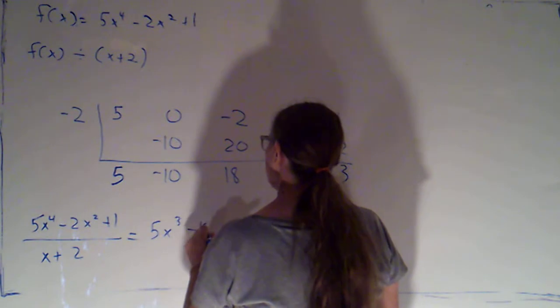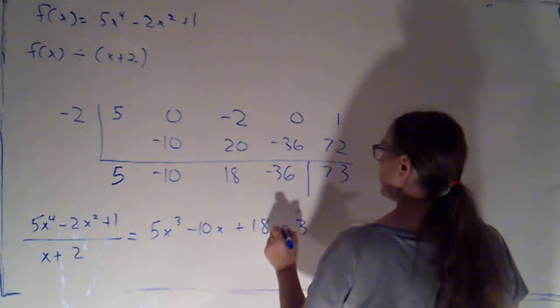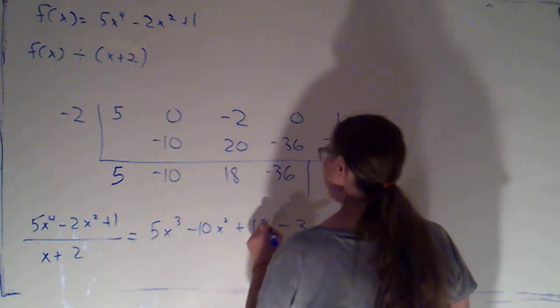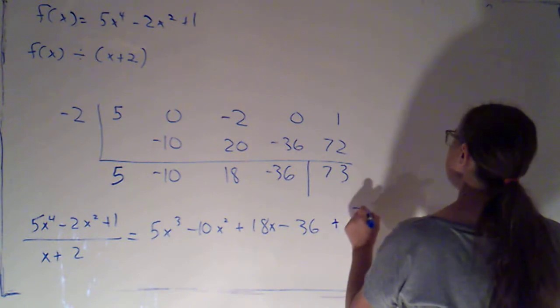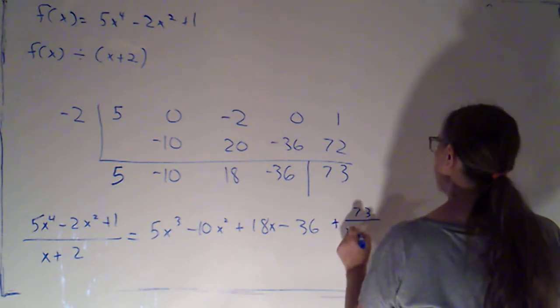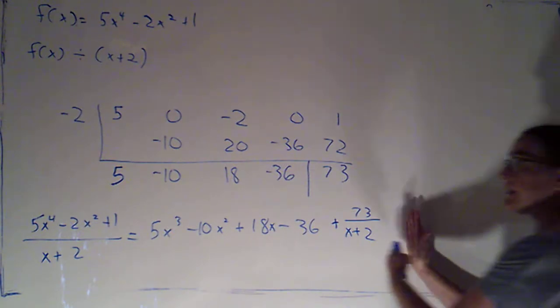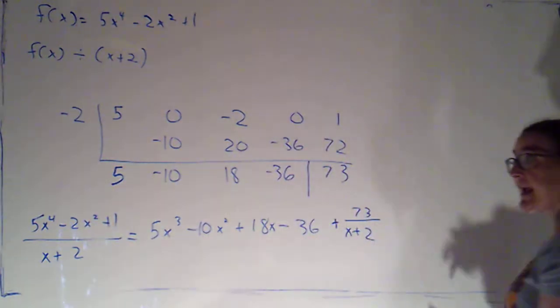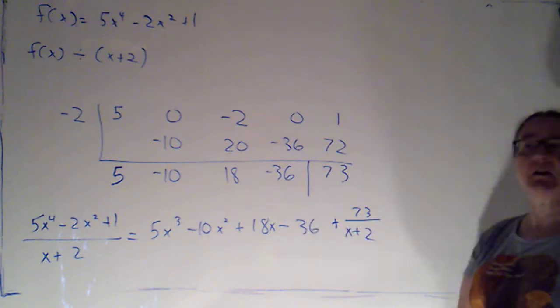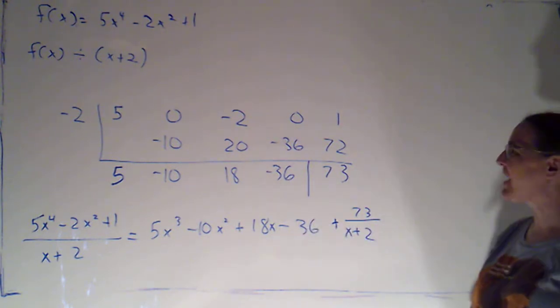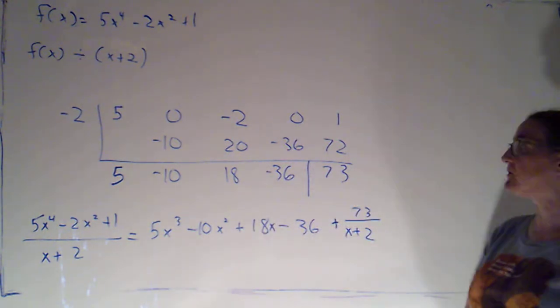5x cubed minus 10x squared plus 18x minus 36, plus my remainder over what we were dividing by x plus 2. So that gives us a nice way of rewriting our quotient. When we get to rational functions in a couple of sections, being able to rewrite things this way is going to be particularly helpful.